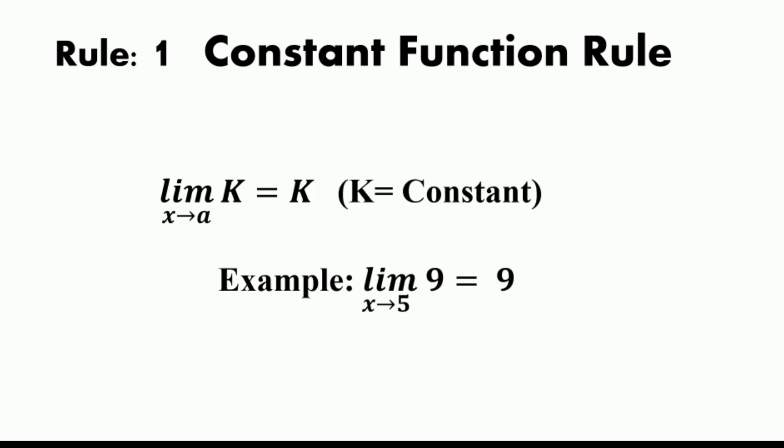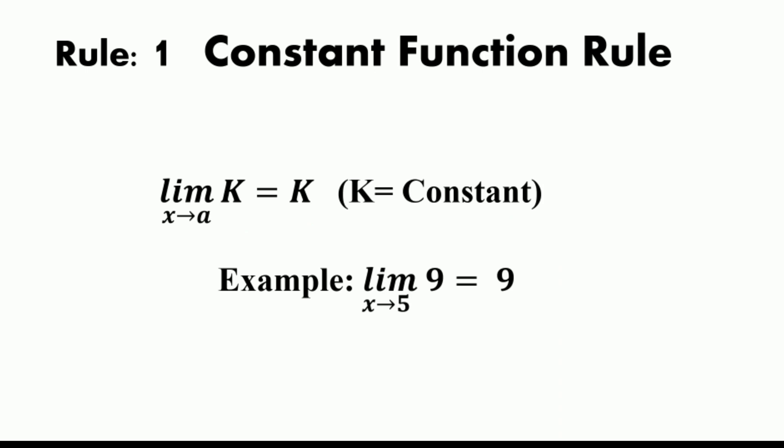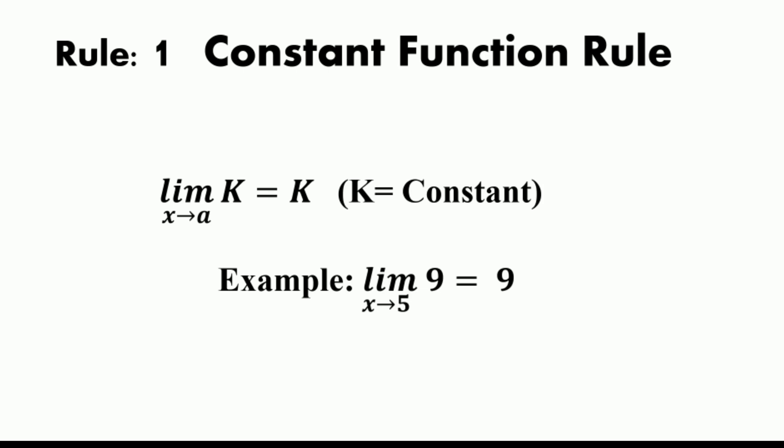The first rule is the constant function rule. The limit of k where x approaches a is equal to k, where k is a constant. So the limit of a constant function is equal to the constant. For example, the limit of 9 where x approaches a is equal to the constant 9.